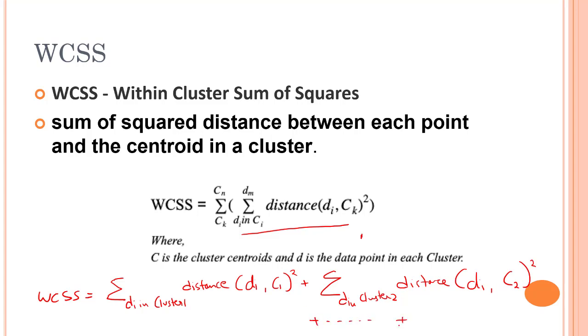So basically we are finding out the variation, we are trying to find out the variation within a cluster. This distance Di, Ci, it is the sum of the square of the distance between each point and its centroid within a specific cluster, and the same for the other terms.